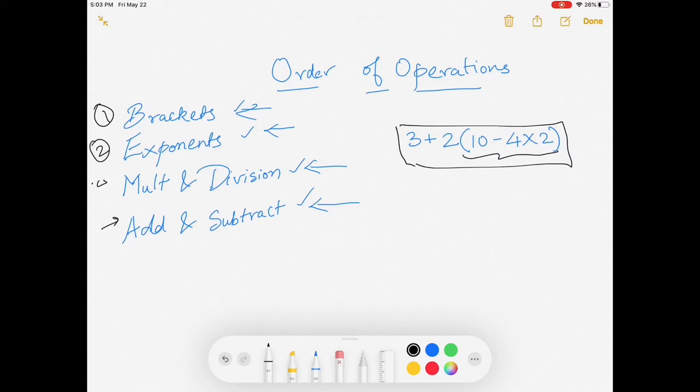Okay, so inside the brackets, you notice that we find there is no more brackets, there is no exponents, but we do see some multiplication. So that's the first thing we'll do. So we're going to write everything else as is and do 4 times 2, which is 8, and keep the negative there.